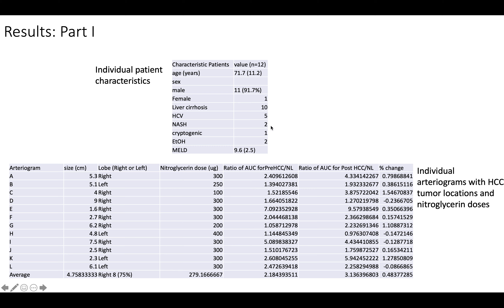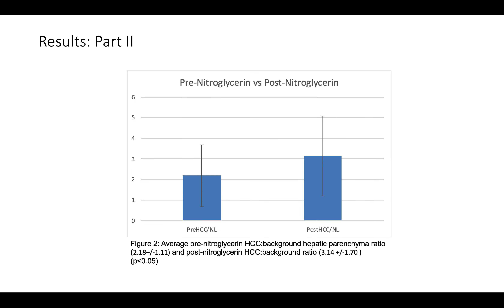These are our results. 11 out of 12 patients were male. The majority had cirrhosis, with the etiology of their chronic liver disease being hepatitis C. The average MELD score was 9.6. The majority of tumors were in the right hepatic lobe. The mean nitroglycerin dose was 279 micrograms. In the vast majority of patients — all except two — there was an increase in the AUC ratio after nitroglycerin administration. The pre-nitroglycerin average AUC ratio was 2.18 and post was 3.14, with a p-value less than 0.05.